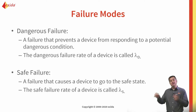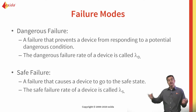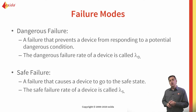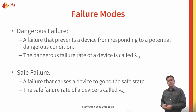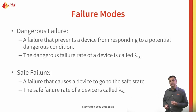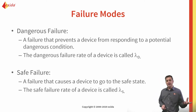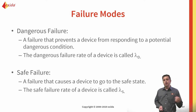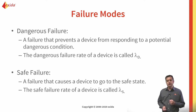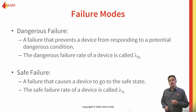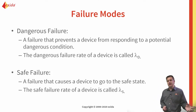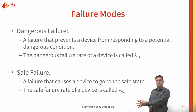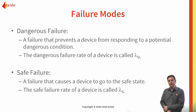Does the safety function prevent me from going to a safe state — does it fail dangerously? Or does the safety function cause a spurious trip, causing a transition to the safe state when there is no demand from the process? A failure that prevents a device from responding to a potential hazardous condition is a dangerous failure; a failure that causes the device to go to the safe state is referred to as a safe failure.